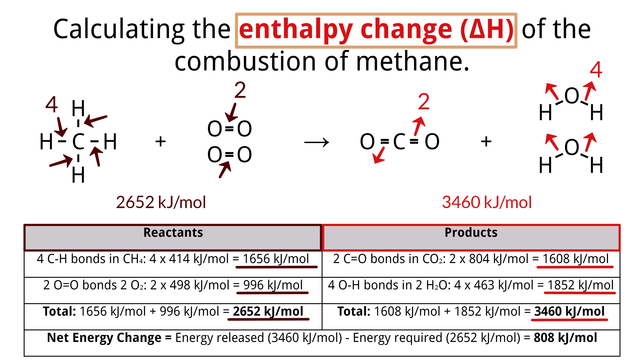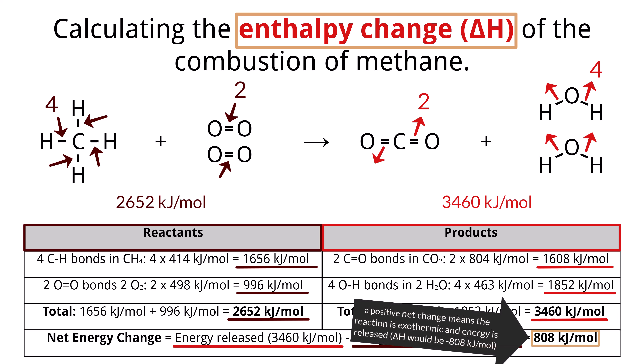The net energy change equals the energy released (3,460 kJ/mol) minus the energy required (2,652 kJ/mol), equaling 808 kJ/mol. This calculation shows that 808 kJ/mol is released when one mole of methane combusts, highlighting the exothermic nature of the reaction and the significant energy released as heat and light.